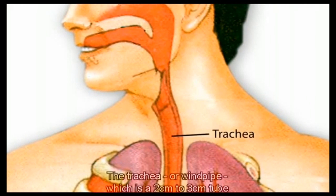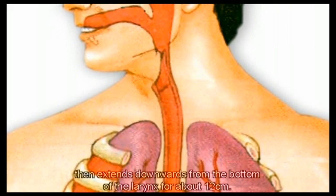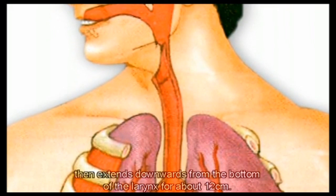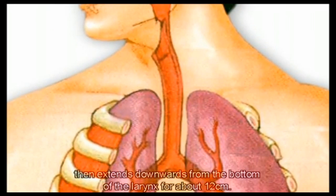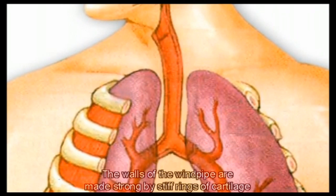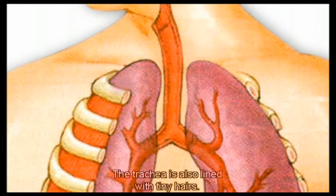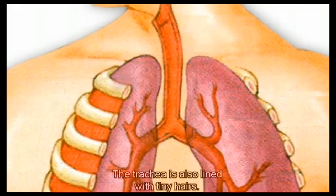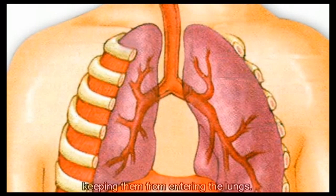The trachea, or windpipe, is a 2–3 cm tube that extends downwards from the bottom of the larynx for about 12 cm. The walls of the windpipe are made strong by stiff rings of cartilage that keep it open. The trachea is also lined with tiny hairs, which sweep foreign particles and fluids out of the airway, keeping them from entering the lungs.